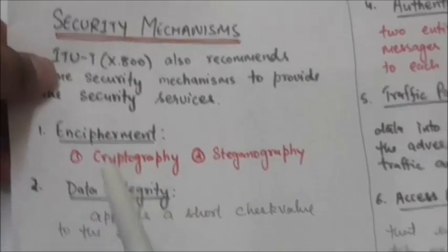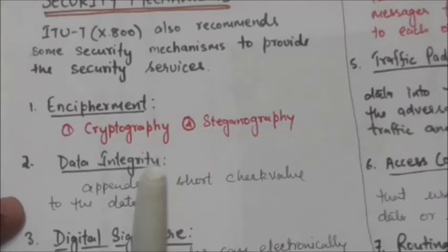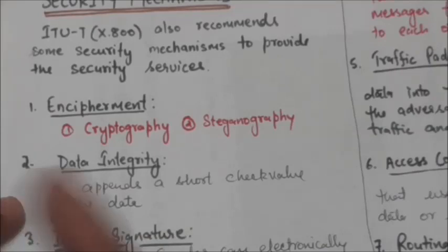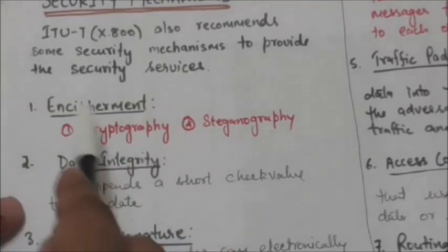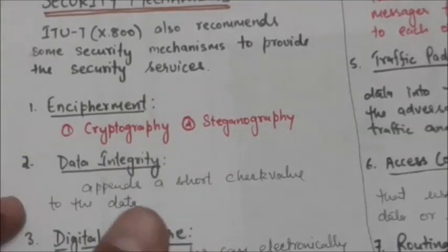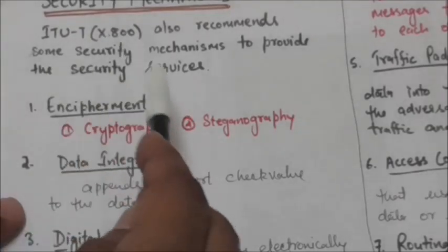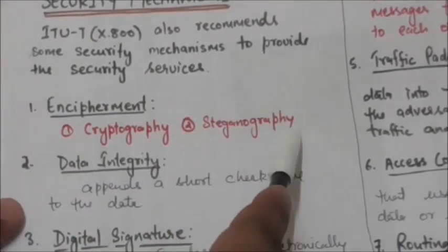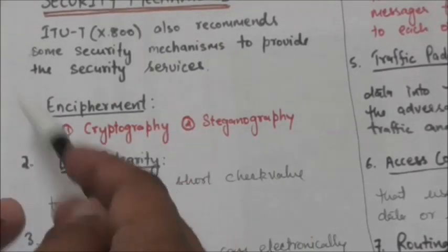The first mechanism is encipherment. Hiding or covering data can provide confidentiality. It can also be used to complement other mechanisms to provide other services. The two techniques used for encipherment are cryptography and steganography, which we will study in detail later.